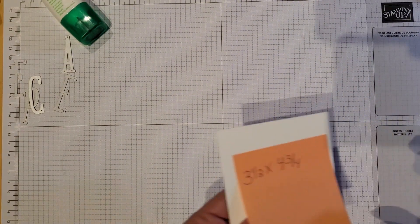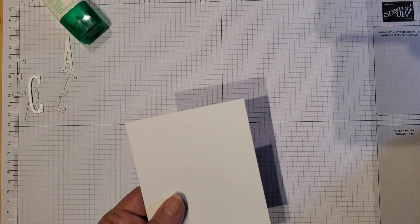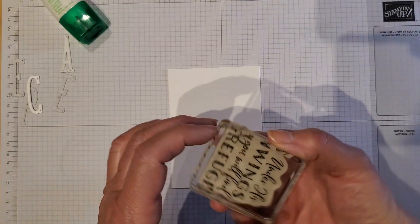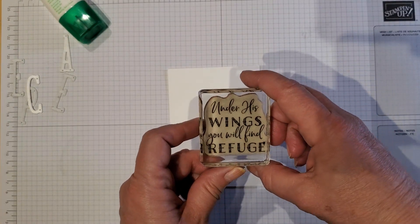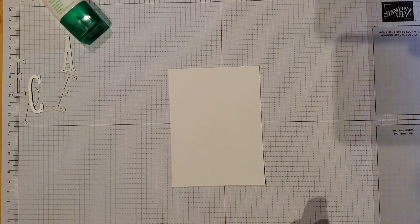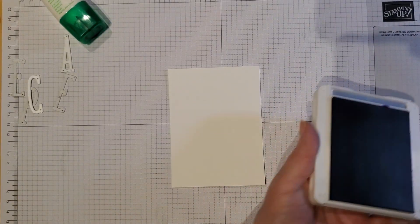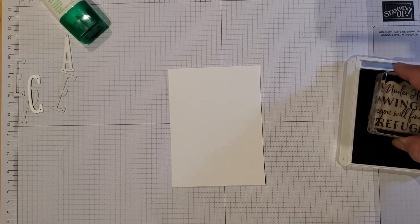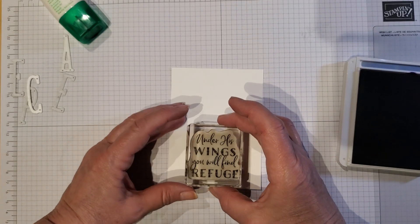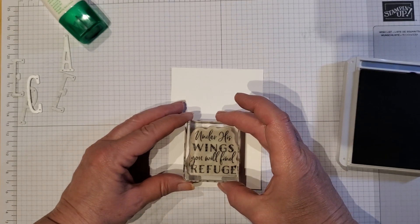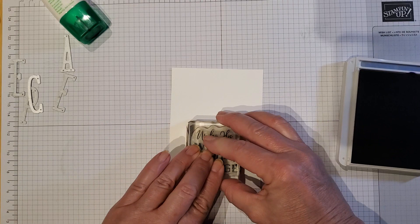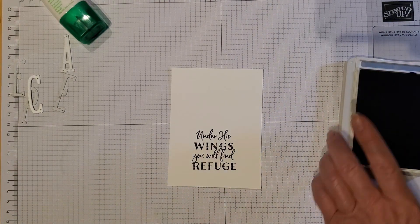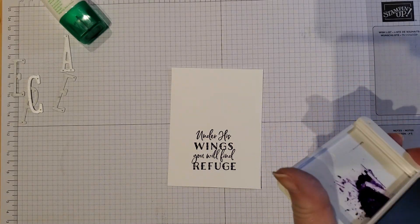So the nice thing with the liquid glue is there's a little wiggle room till you get it to where you want it to be. You can kind of slide it into place and then press it down and let that dry. Okay, we're going to set that aside for now. All right, let's pull in this piece here, this white. And I'm going to stamp along the bottom here. I'm using the words 'under his wings, you will find refuge.' And I'm going to stamp that in the gorgeous grape. We've got that upside down here. And let's put that right in the center. And there we go. And that's all I need of that one.